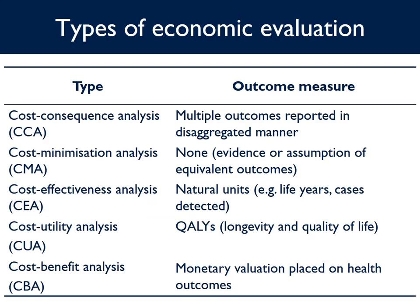There are several types of economic evaluation, and the difference comes in how we measure effectiveness — i.e. outcomes. The cost component is the same across all types. The first type is cost-consequences analysis. In this type, costs and consequences of alternative therapies are calculated and reported in a disaggregated manner. It is then up to decision-makers to interpret, synthesize or weight the diverse outcomes. This approach assumes that decision-makers can interpret and use such results consistently and are the best people to decide on the relative weight placed on different outcomes.